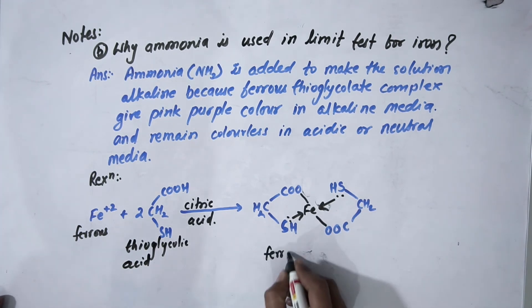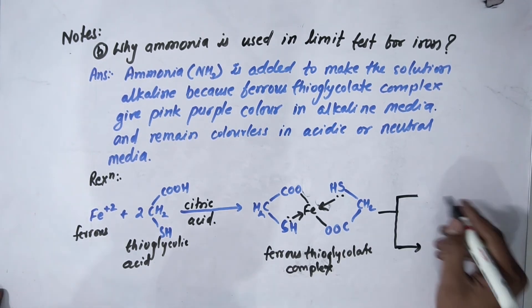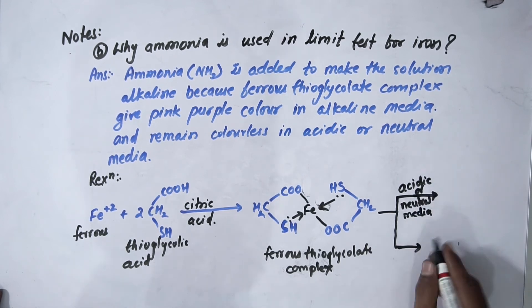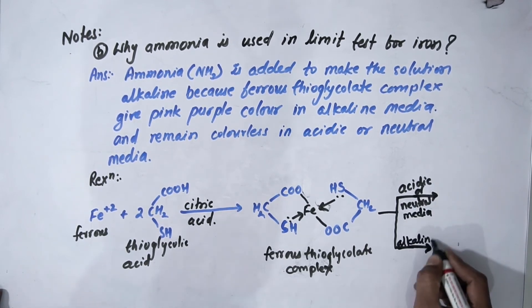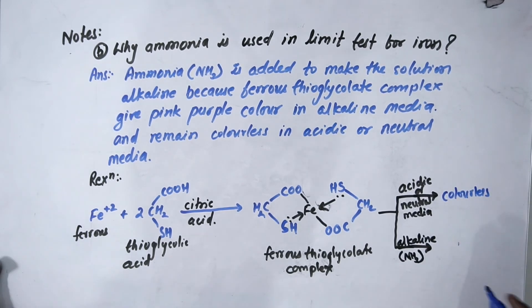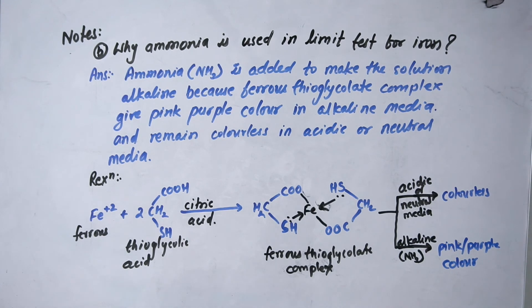forming the ferrous thioglycolate complex. Now if you subject this complex to two different media—one is acidic or neutral media and the second is alkaline media or in the presence of ammonia—in acidic and neutral media you will get colorless, and in alkaline media, pink-purple color will be produced. So this is all about why